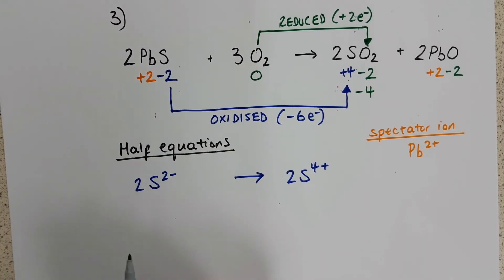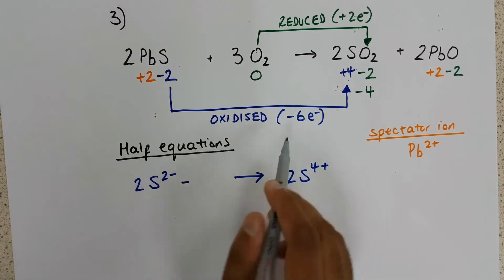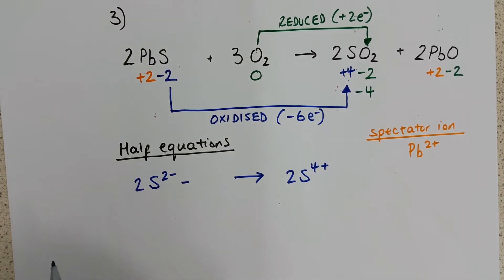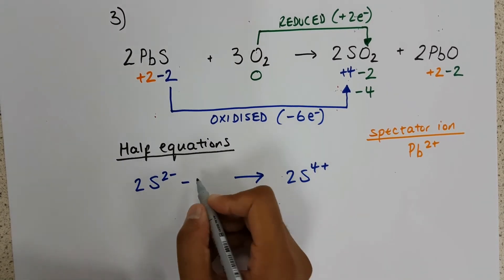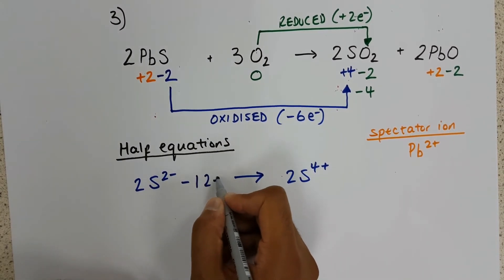And in this example, I'm actually going to write on this side, we have subtracted six electrons per sulphur. There are two sulphurs, so all in, it's actually twelve electrons being removed.